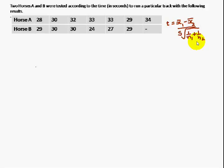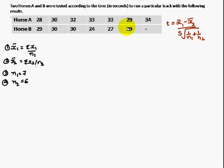Where x1 bar is equal to sigma x1 by n1, x2 bar is sigma x2 by n2. N1, horse A number of items are 7. Similarly n2, horse B has 6 items, therefore n2 is equal to 6.